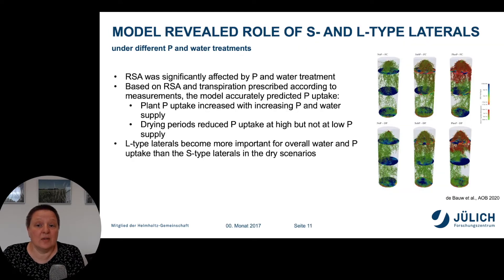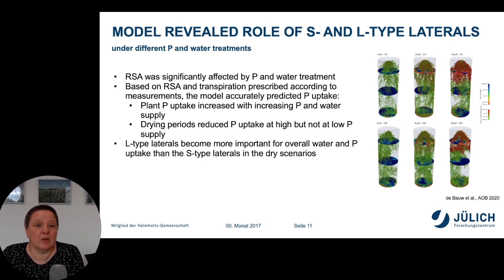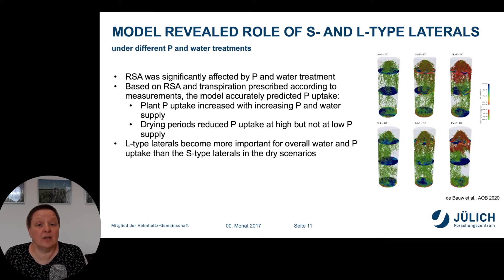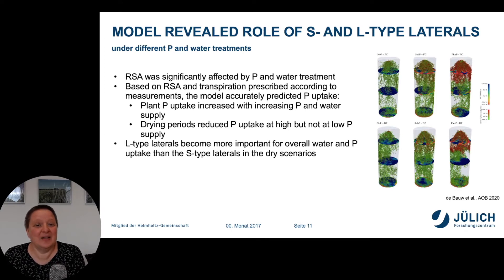Altogether, six different treatments were virtually simulated: three different phosphorus treatments and two different water conditions, one with drying cycles and one where the water content was kept at field capacity. The model revealed the role of different types of laterals characteristic for rice root systems under the different phosphorus and water treatments. The results showed that the root system architecture was significantly affected by both treatments. Based on root system architecture and transpiration prescribed according to measurements, the model accurately predicted phosphorus uptake, which increased with increasing phosphorus and water supply. The drying periods reduced phosphorus uptake at high but not at low phosphorus supply.